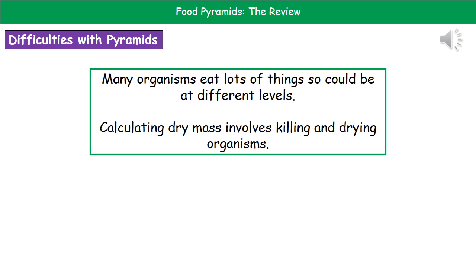The other big problem when considering pyramids of biomass is that to calculate the dry mass, we need to kill and dry the organisms. Because dry mass involves the mass without water, they would have to be dead and dried out to give us that value.